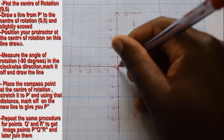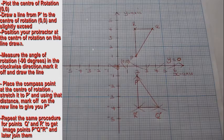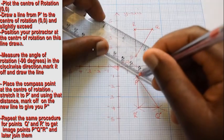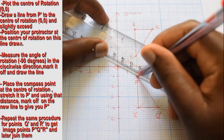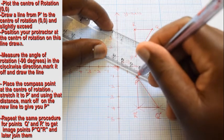Plot the center of rotation using a ruler, join point P' to the center of rotation and extend the line slightly.